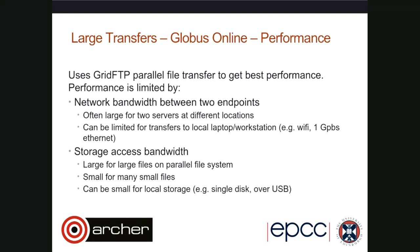Globus Online uses GridFTP, a file transfer protocol with very good performance, but it is limited by one of two things: the network bandwidth between the two endpoints, or the storage access bandwidth. If you are transferring between two machines connected by Janet, you will have a very large bandwidth, but this will end up being very small if at some point you are transferring via Wi-Fi or Ethernet. Regarding RSync, it's worth noting that you still need to be careful when pulling using RSync, as this spawns an RSync server process on the login node. So for long-running RSync processes, it's best to run a push from the serial post-processing nodes or use the RDF data transfer nodes.